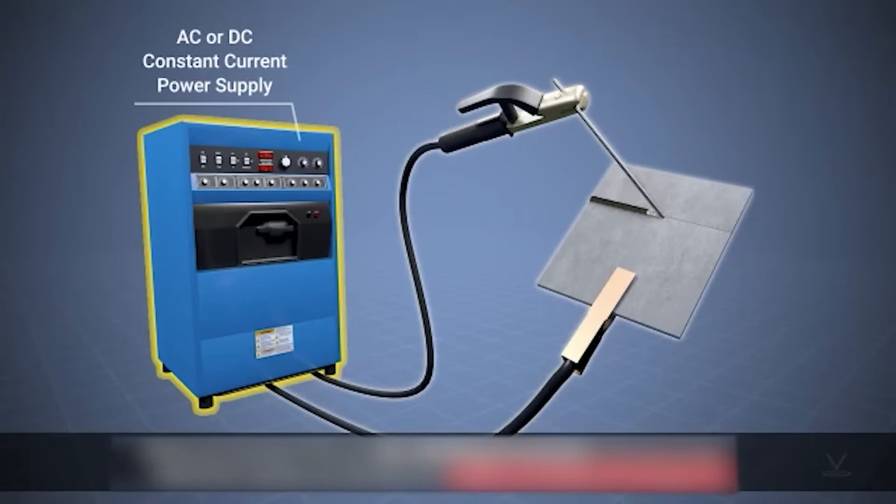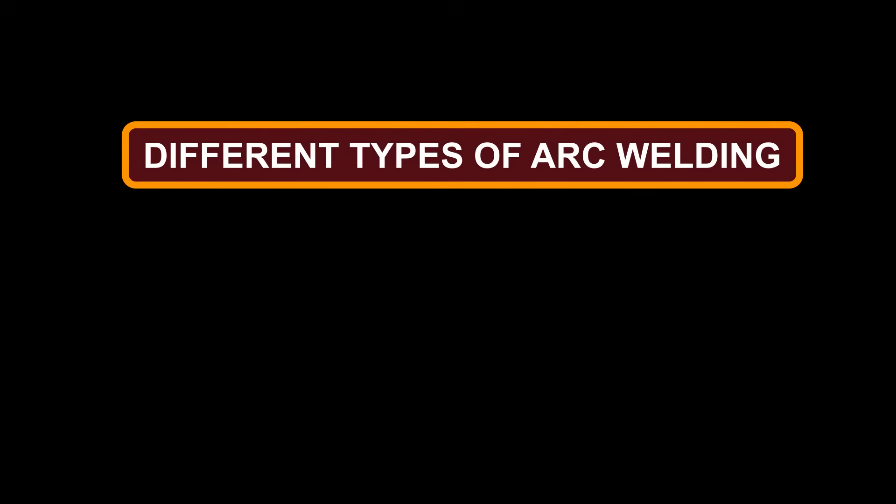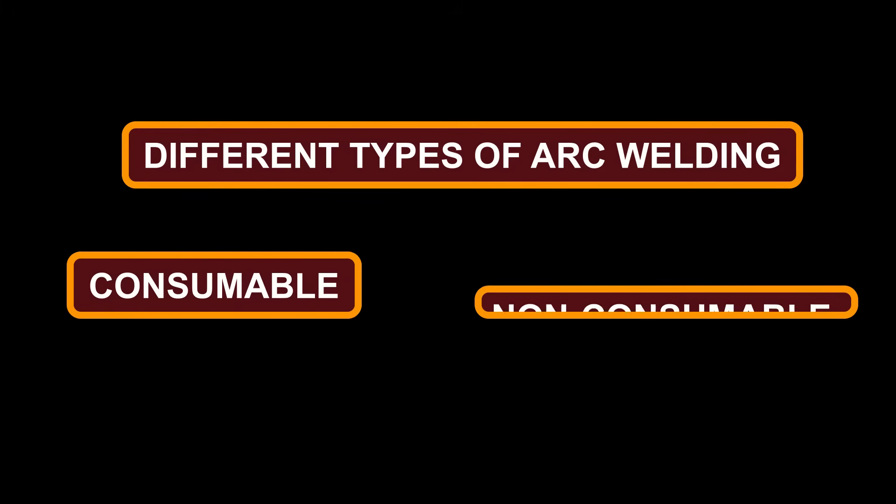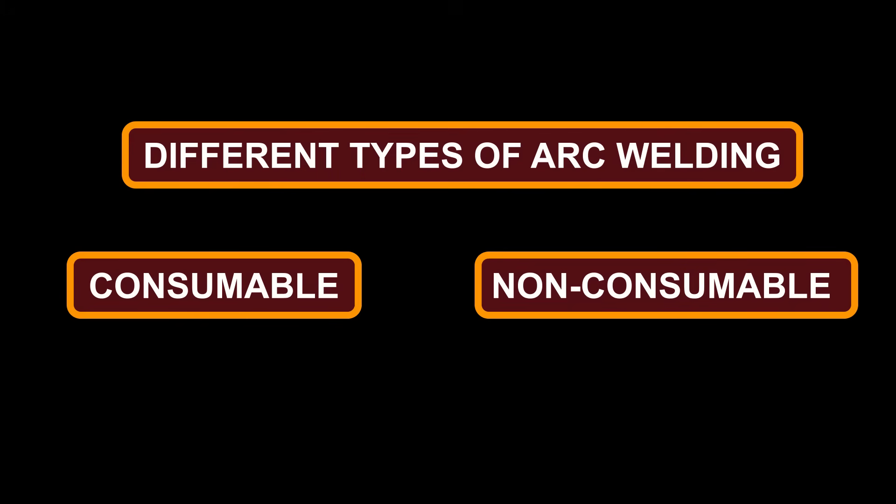Different types of arc welding. This process can be categorized into two types: consumable and non-consumable electrode methods.